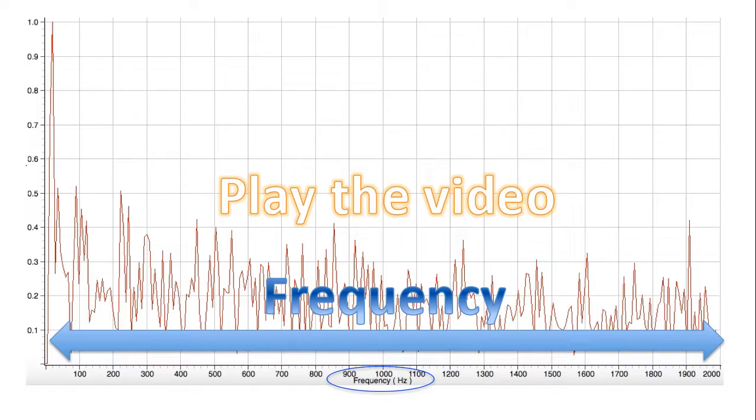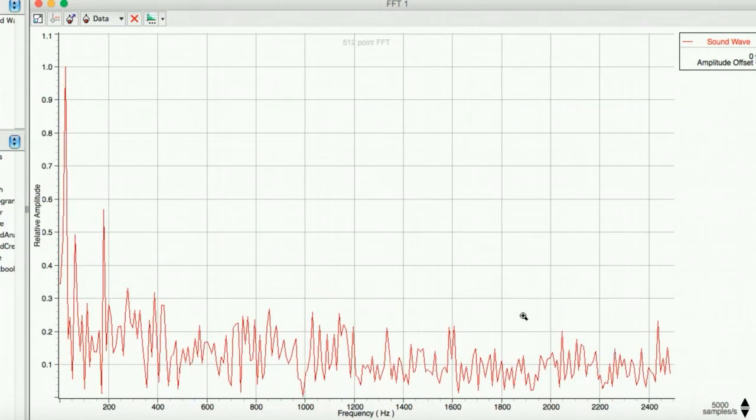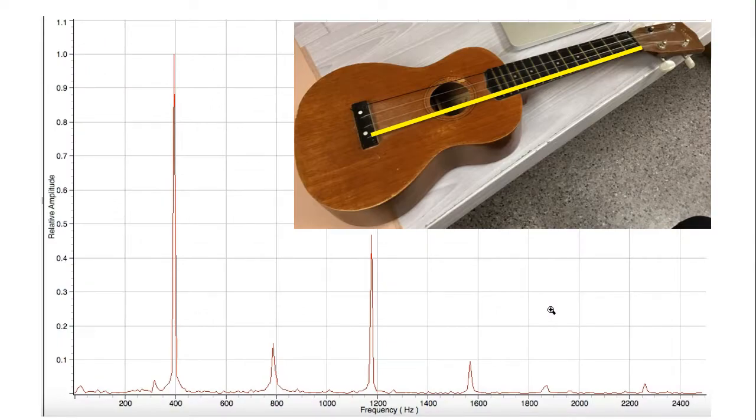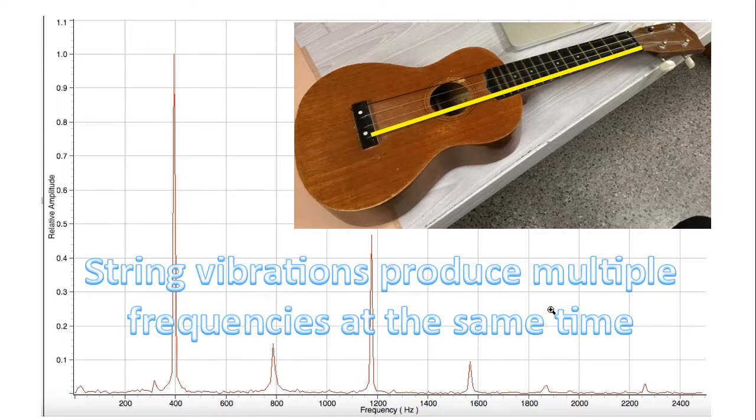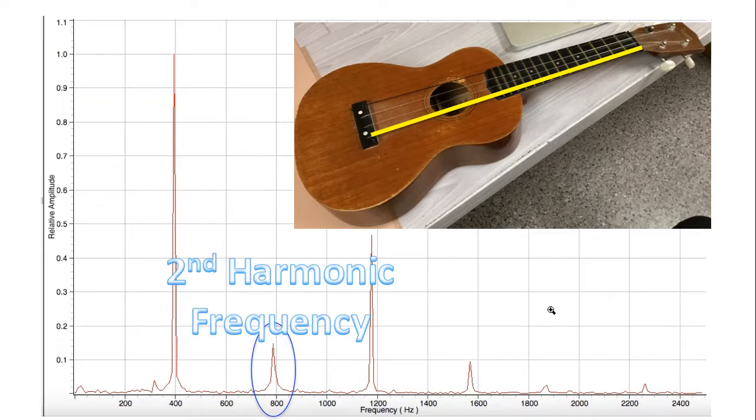From the previous video, I've grabbed this still frame and we're going to talk about this right now. String vibrations produce multiple frequencies at the same time. This first spike in the graph is called the first harmonic frequency. It's just below 400 Hertz. The second spike in the graph is called the second harmonic frequency.